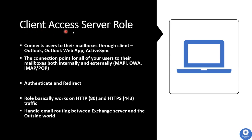First, we are going to see details about the Client Access Server role. As the name suggests, the Client Access Server connects users to their mailboxes through clients like Outlook, Outlook Web App — that is, accessing Outlook on a browser — or accessing emails on a mobile phone via ActiveSync. The Client Access Server authenticates and redirects those requests to the appropriate mailbox server, handling all client connections. It does not check email content or hold email messages locally — it simply accepts incoming requests and routes them to the correct mailbox server.